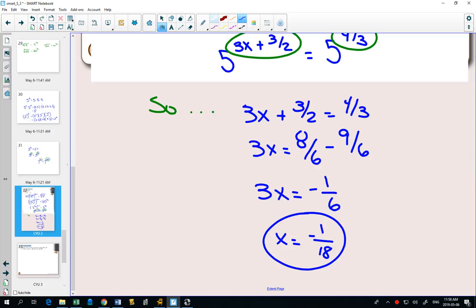Again, the main goal is to get both sides as a single power with the same base. OK? And if you can do that, then you can do the so step, and the rest is easy. If you can't do that, this method doesn't work. This method will only work if we can get the bases the same. OK, questions 9 and 10. Start working on those now.